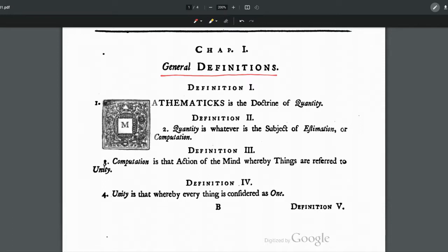Let's go ahead and get started with our definitions. We'll begin with the first definition, which answers the question, what is mathematics? The answer is, mathematics is the doctrine of quantity. Mathematics is the doctrine or science of quantity.